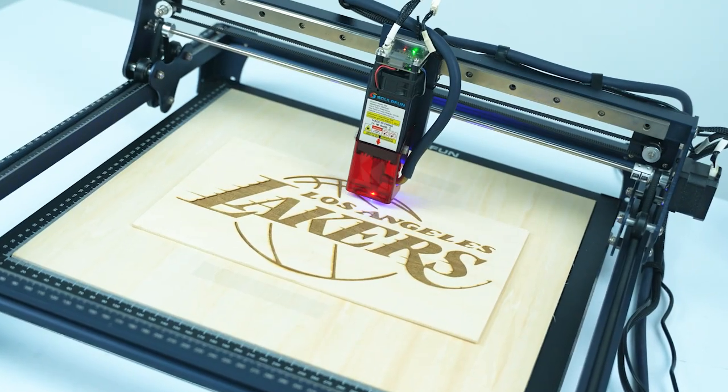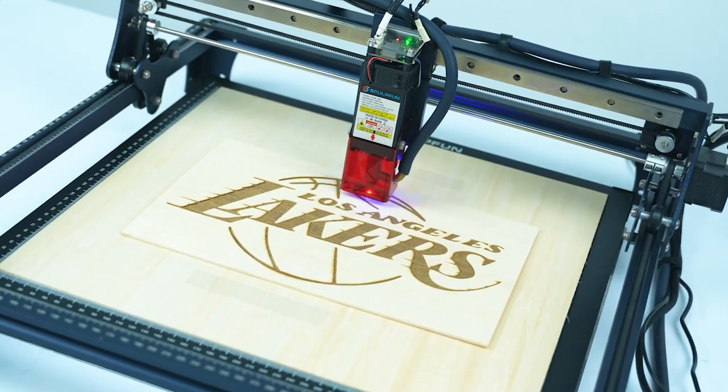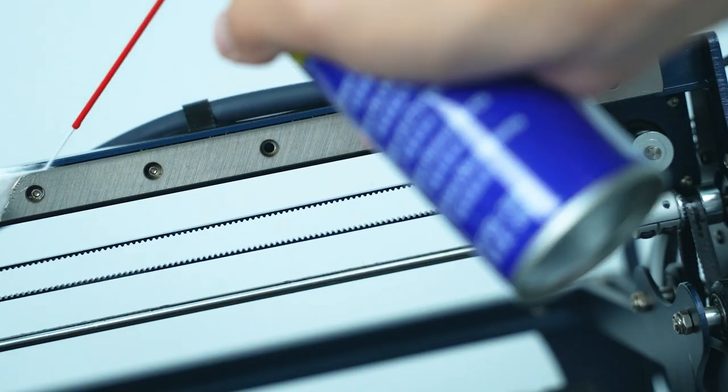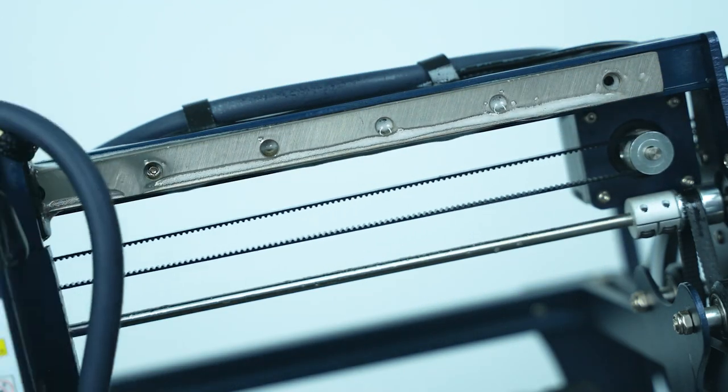Frequent high-speed engraving requires attention to rail maintenance. It is recommended to use liquid lubricants such as WD-40. Not only can it lubricate the guide rail, it can also prevent rust.